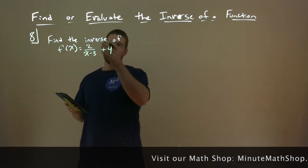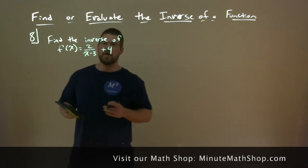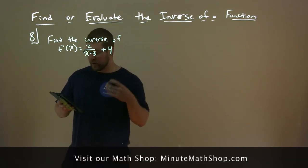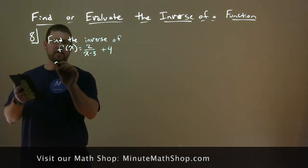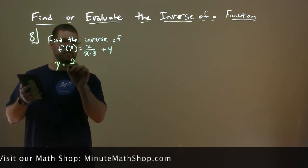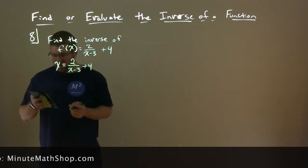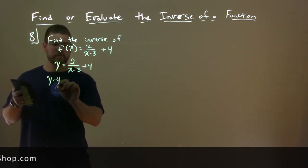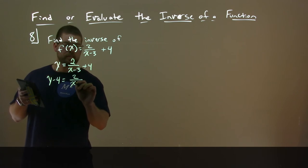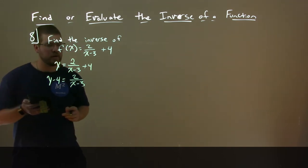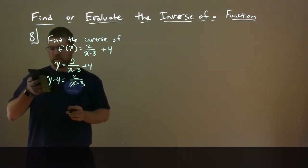Alright. We want to find the inverse of f(x) equals 2 over x minus 3 plus 4. So let's set this up as a y equals. y equals 2 over x minus 3 plus 4. And let's get x by itself. Let's subtract 4 from both sides.